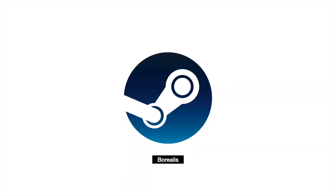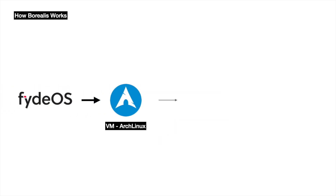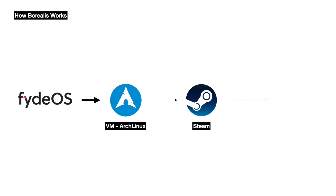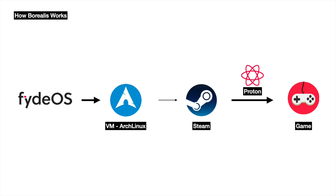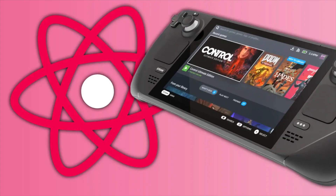The capability to run Steam on FidOS is thanks to a project codenamed Borealis. This is a virtual machine based on Arch Linux that, besides running native Linux games, uses the Proton layer to enable many triple-A games from the Windows platform to run seamlessly. The Steam Deck also utilizes a similar approach to achieve an optimal gaming experience.